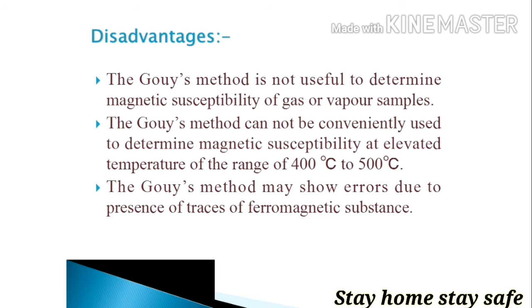The Gouy method is not useful if there are some traces of ferromagnetic substances present, because errors may arise due to very small amounts of ferromagnetic impurity present in the specimen, and it affects results dramatically.